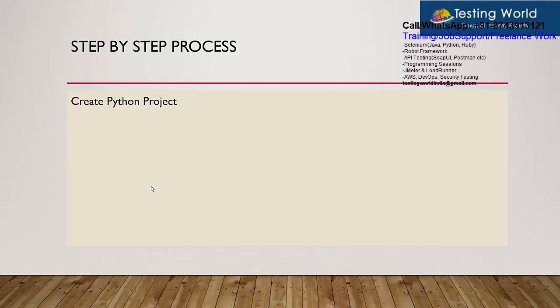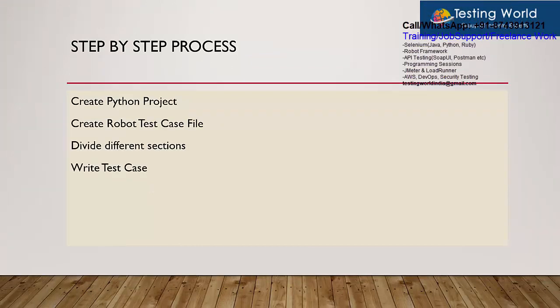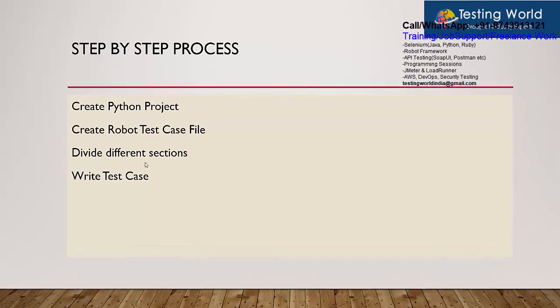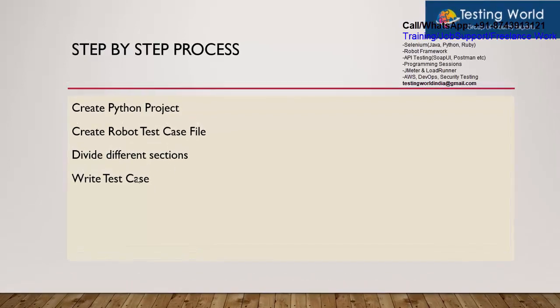Now we are going to follow these four steps. First we will create a Python project, then we will create a robot test case file, we will divide our sections, and we will start writing the test case. Let's move to PyCharm.